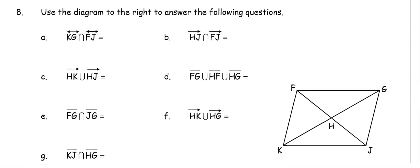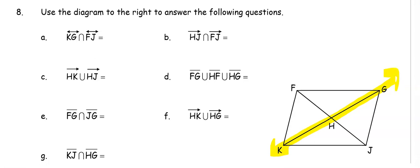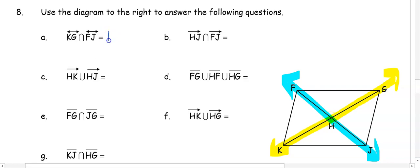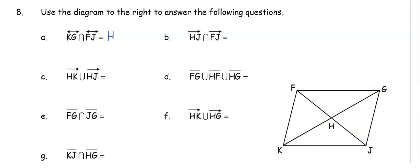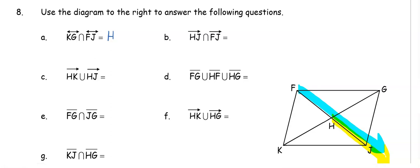In number eight: the intersection of line KG and line FJ. KG has arrows going in both directions, and so does line FJ. The intersection — where they both overlap — is at point H. For part B, we're again looking for an intersection: ray HJ and ray FJ. Where they overlap is ray HJ.